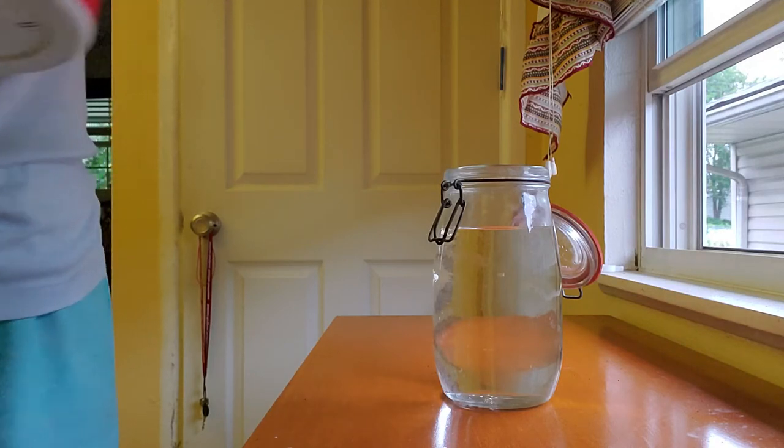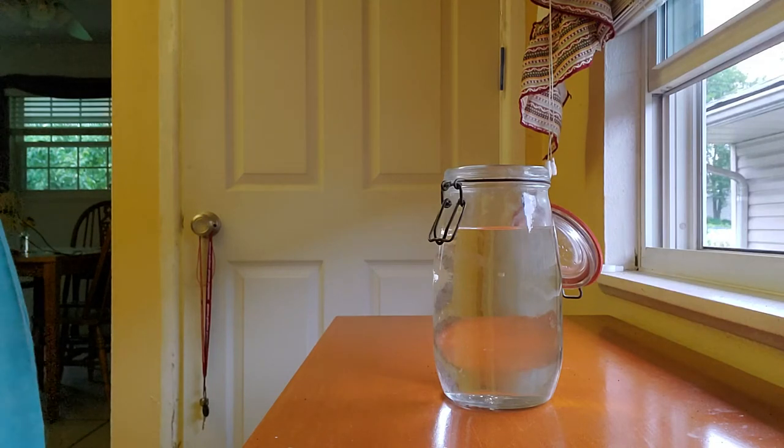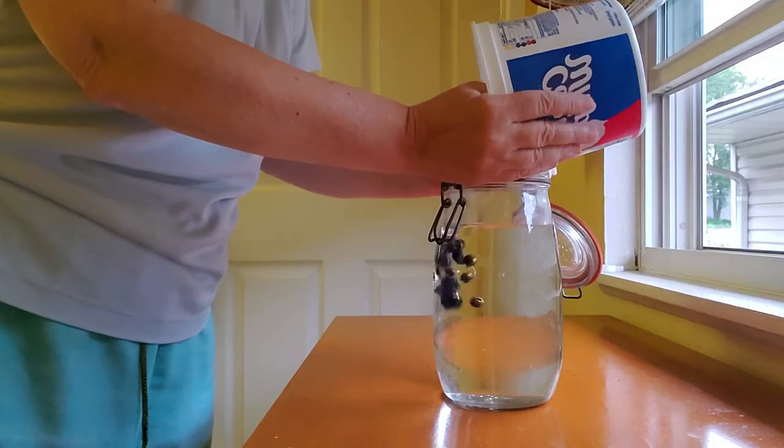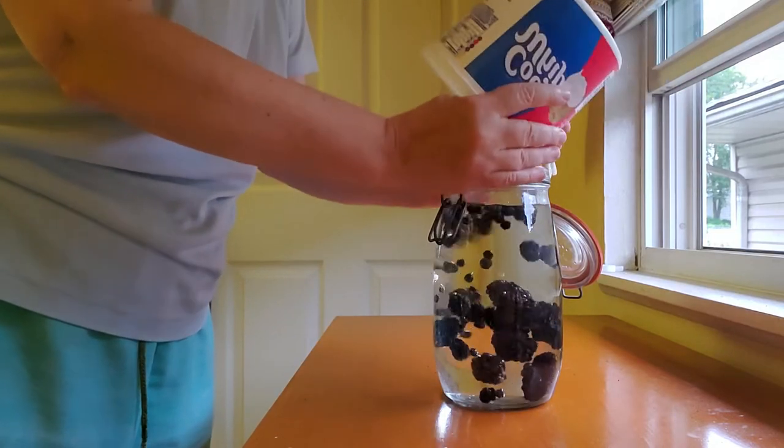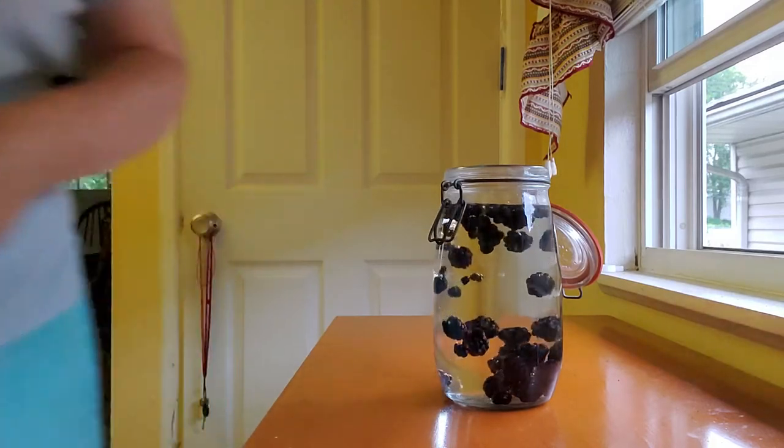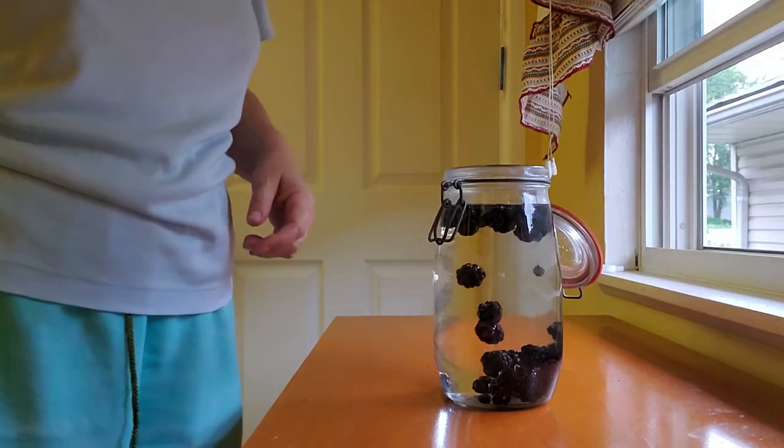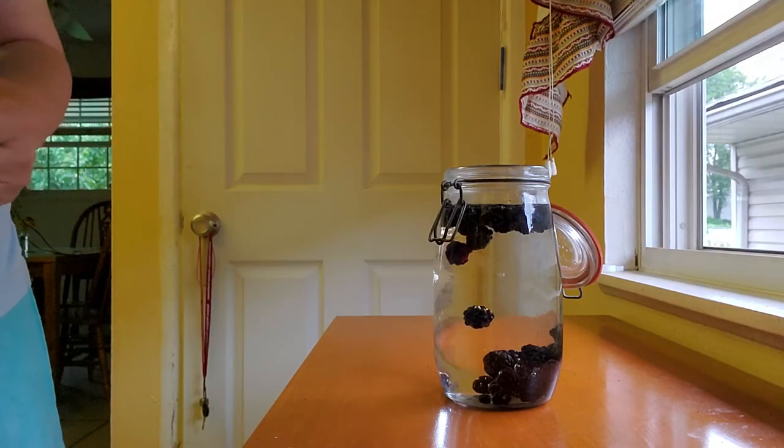And then next I'm going to put in some berries and these are what I'm going to call backyard berries. They're primarily blackberries and raspberries with some aronia that I have from last year that I dried from last year.